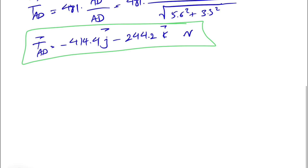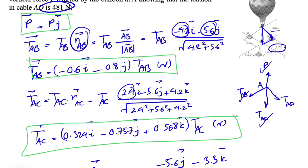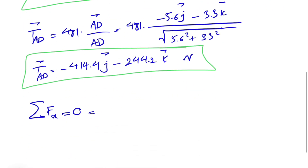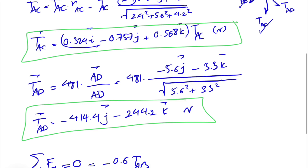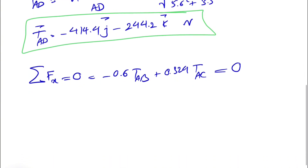Now that we have every force in vector form, we apply equilibrium: sum of forces in x, y, and z all equal zero. For the x-direction: P has no x-component; T_AB contributes minus 0.6 T_AB; T_AC contributes plus 0.324 T_AC; T_AD has no i component. Since we have two unknowns in this equation, we can't solve it yet — let's move to Fy.